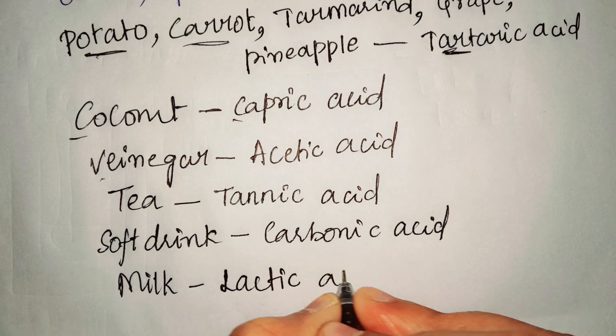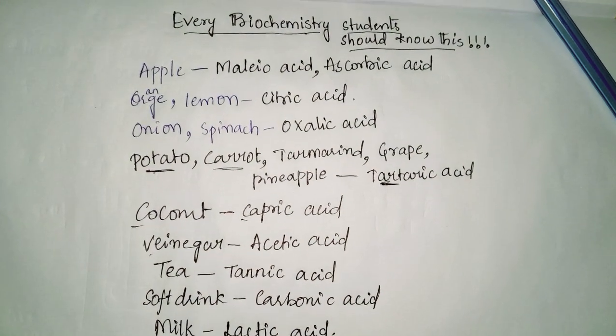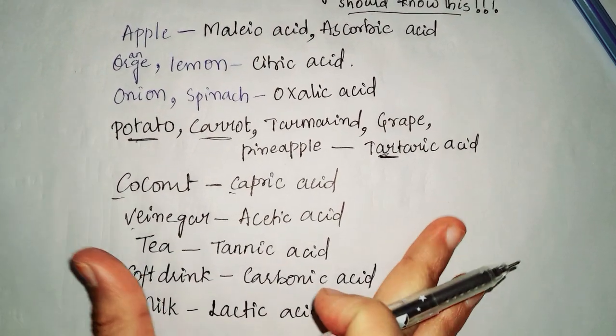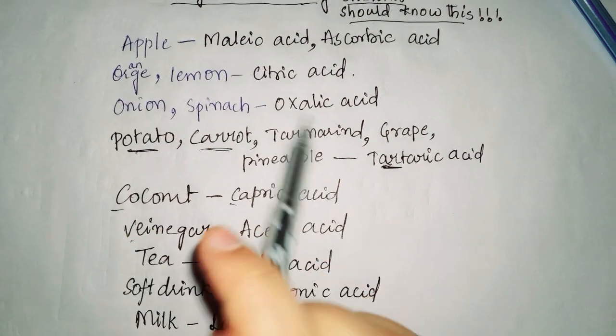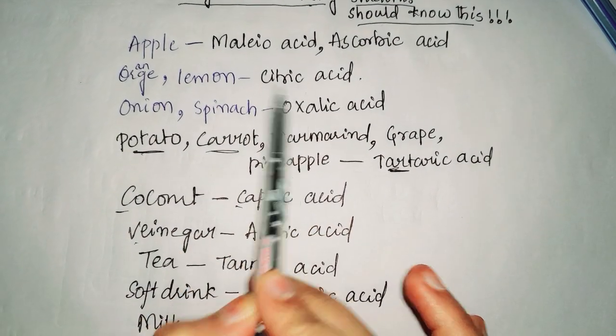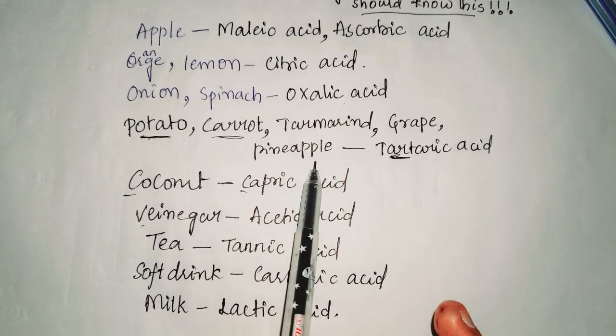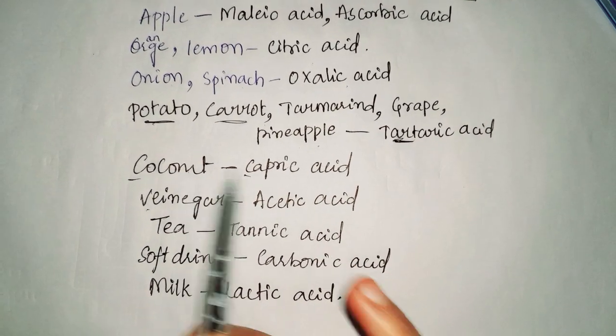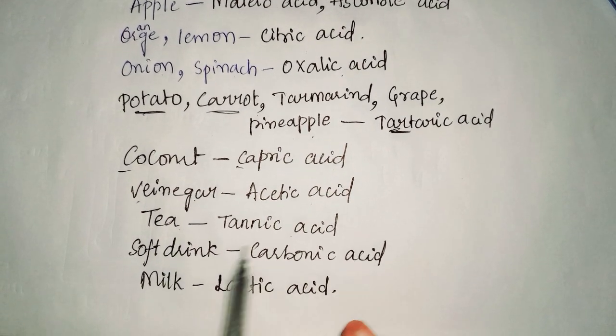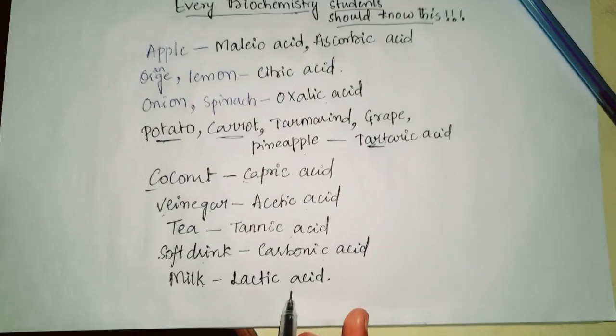So these are the acids which are included in the fruits and vegetables which are actually daily used in our life. Apple is malic acid and ascorbic acid, orange and lemon is citric acid, onion and spinach is oxalic acid, potato, carrot, turmeric, grape, and pineapple is tartaric acid, coconut is capric acid, vinegar is acetic acid, tea is tannic acid, soft drink is carbonic acid, and milk is lactic acid.